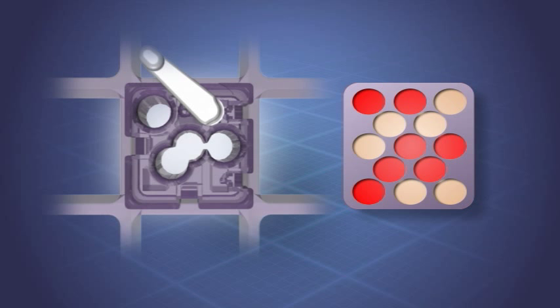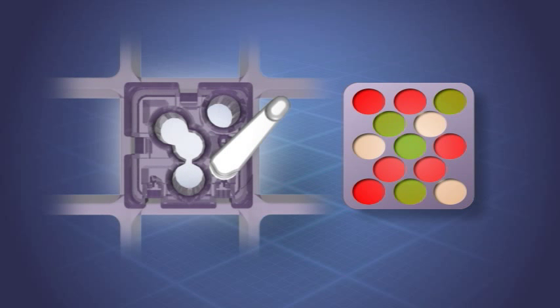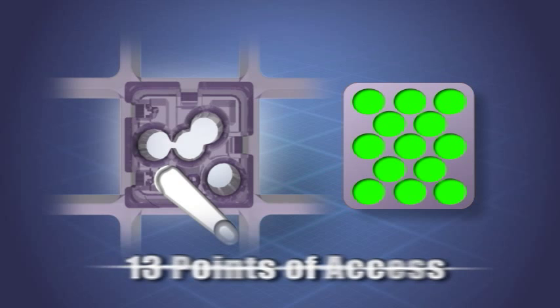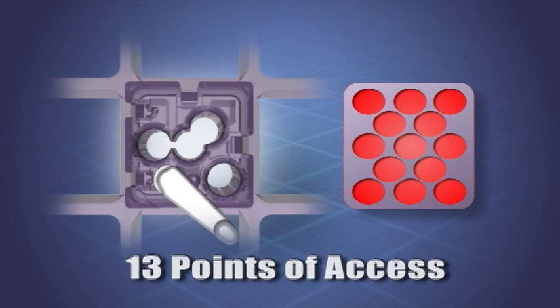As opposed to the limited nine or less points of access that are provided by many of the other systems on the market today, the Centerex MRI locking block provides 13 points of access within each fenestration of the grid.